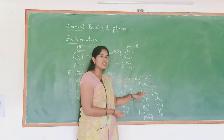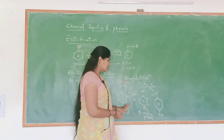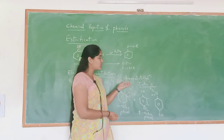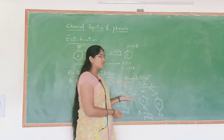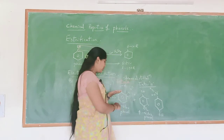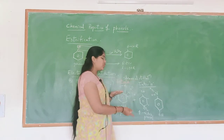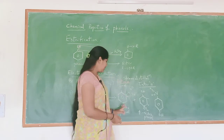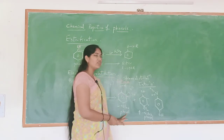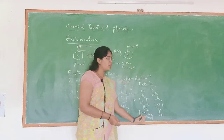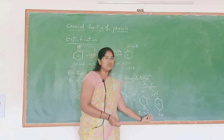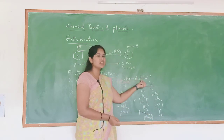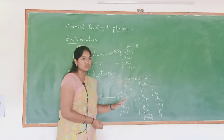Due to having intermolecular hydrogen bonding, 4-nitrophenol is highly stable, so it cannot undergo volatilization. That means it is a stable compound and is less volatile. So if a vapor is containing both 2-nitrophenol and 4-nitrophenol on heating, only 2-nitrophenol gets evaporated and the liquid contains only 4-nitrophenol. So by using steam distillation, we can separate these two.